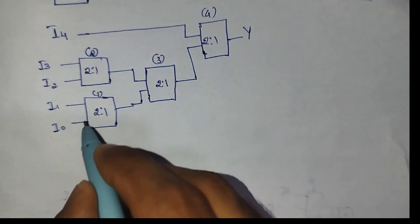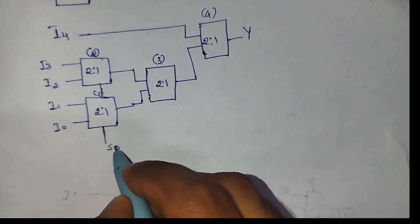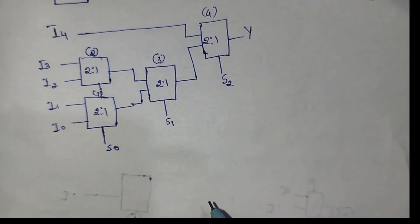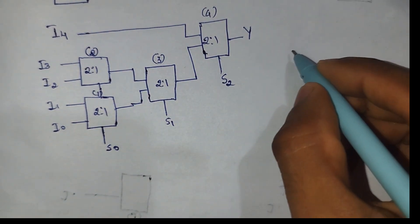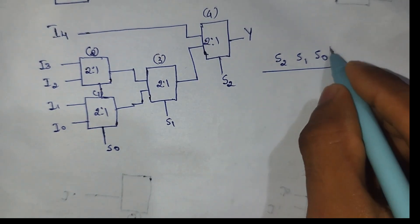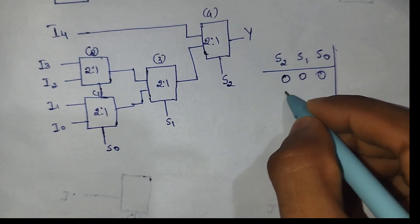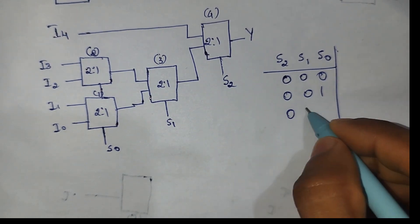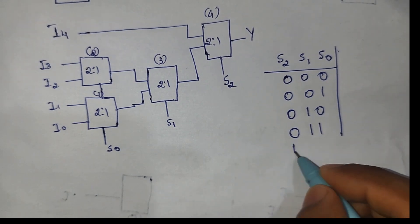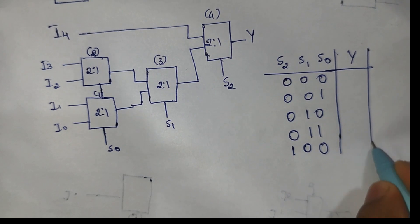To verify this circuit, we apply the control inputs s2, s1, s0. The possible values are: 0 0 0, 0 0 1, 0 1 0, 0 1 1, and 1 0 0. Now we will evaluate the output y for each combination.